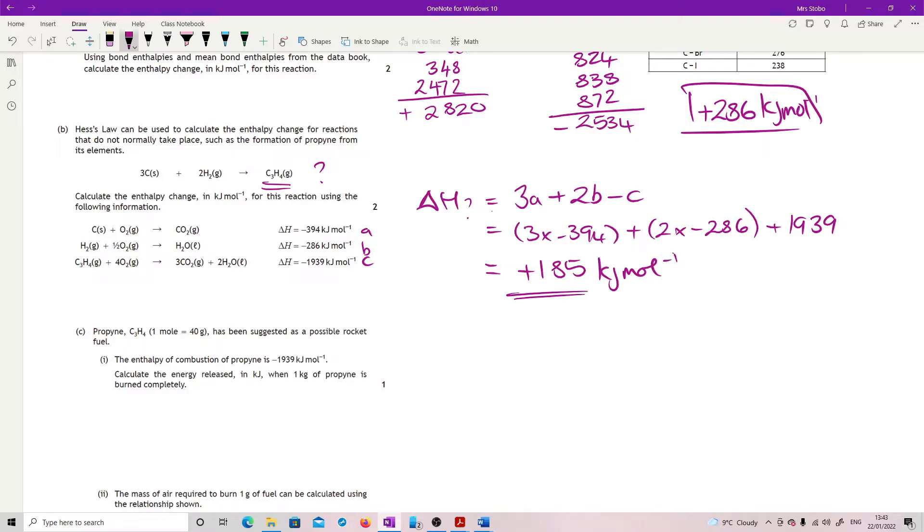If we wanted to do this in a full Hess method, you start with have I got my target equation? Yes. Have I got my data equations? Yes. So then you're going to fix, you're going to flip, you're going to cancel, and you're going to add. And this always gets a bit messier, but I'm absolutely for it as a method, especially if you're not absolutely happy with how it's kind of come round. So first one.